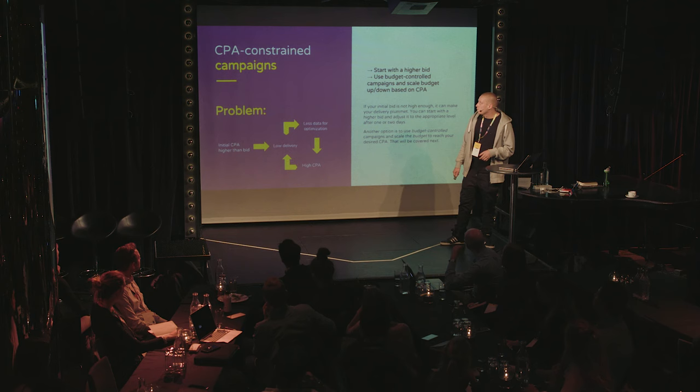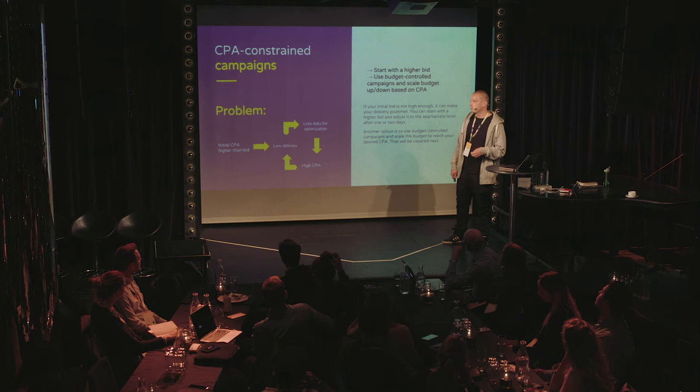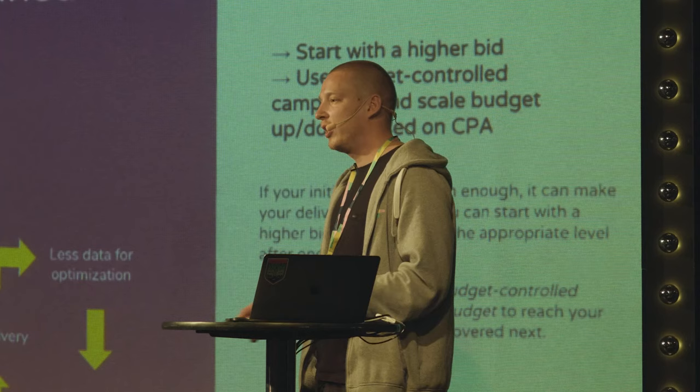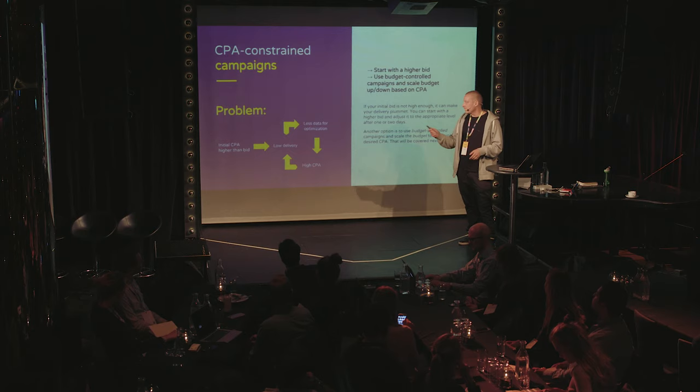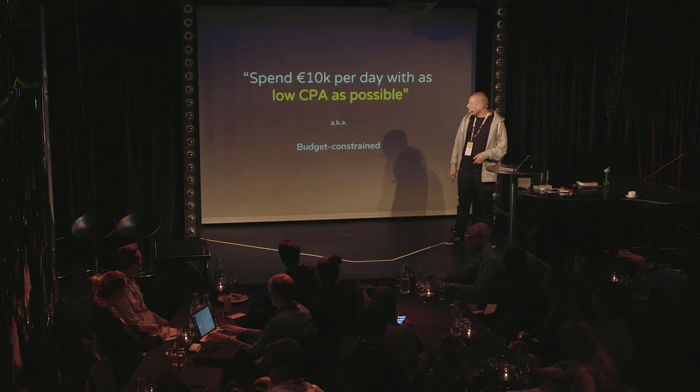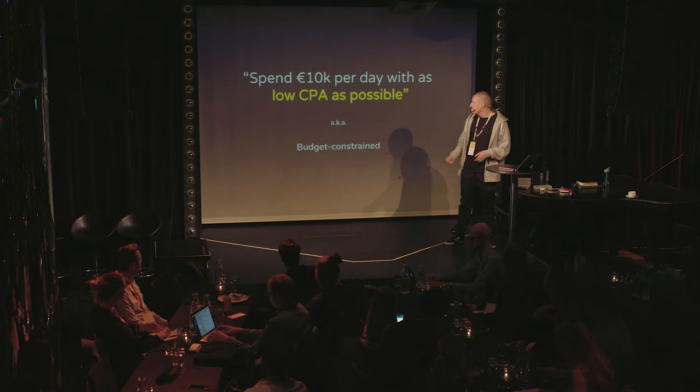What usually happens with CPA campaigns is that you bid initially too low - a really common issue. This causes a vicious circle: if you bid too low, your realized CPA goes above your bid, Facebook notices it's not getting results and doesn't want to destroy your budget, so it starts downscaling the campaign. Less conversions, higher CPA, less learnings. If this happens, don't try to revive the campaign - just pause it, clone it, and restart with a higher bid.